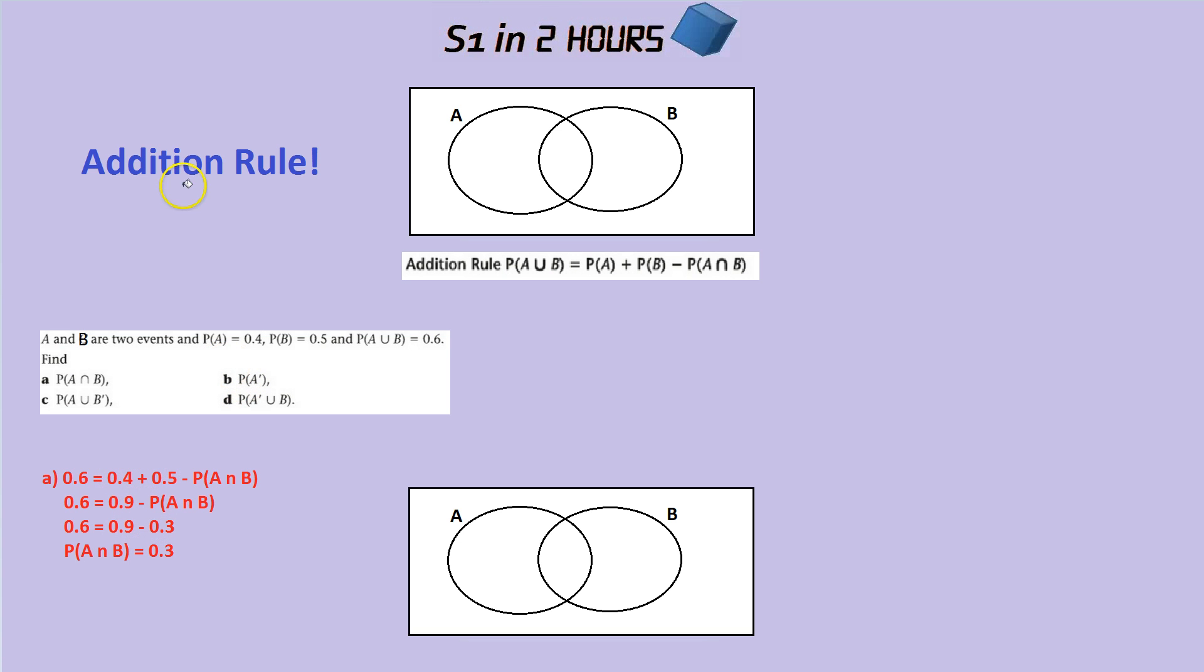For part B, it's the probability of not A. So let's start to fill in our diagram. We know that the overlap is 0.3 and we know that the probability of A is 0.4 overall. So for the whole bubble, see that 0.4 here? That's the whole bubble. So what must this section be if it adds up to 0.4? This must be 0.1.